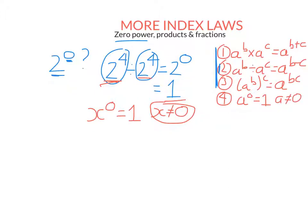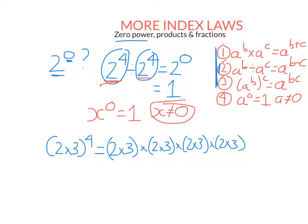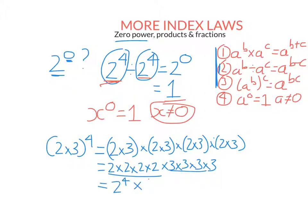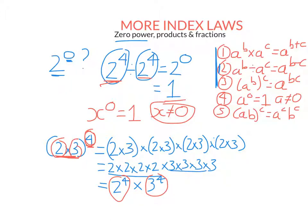That's our fourth index law, and it's consistent with the second index law. Now let's say we had something like two times three and we wanted to raise that to the power of four. That would just be this times by itself four times. The order of multiplication doesn't matter, so we can put all the twos together first and then do the threes. Two times itself four times is just two to the power of four, and three times itself four times is just three to the power of four.